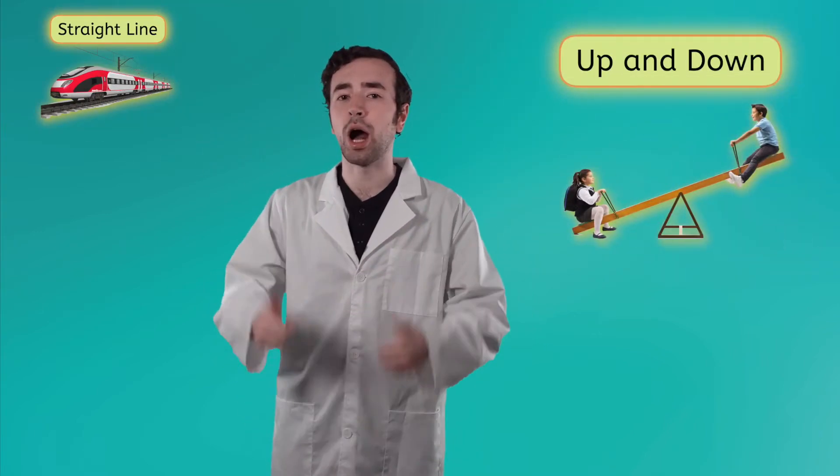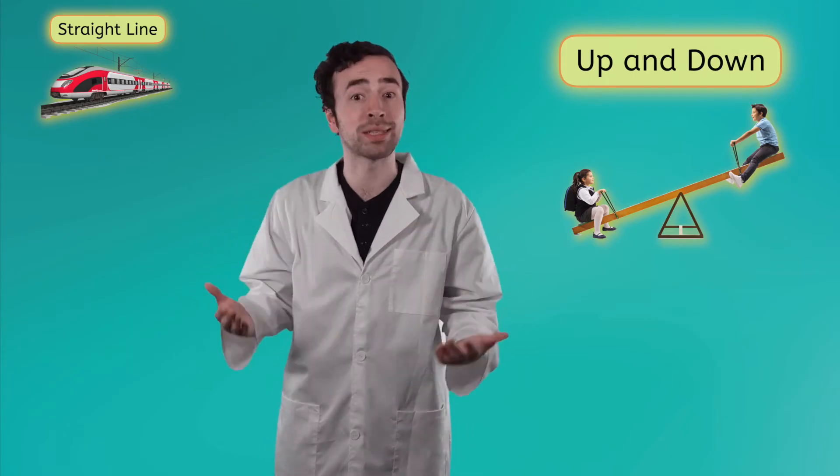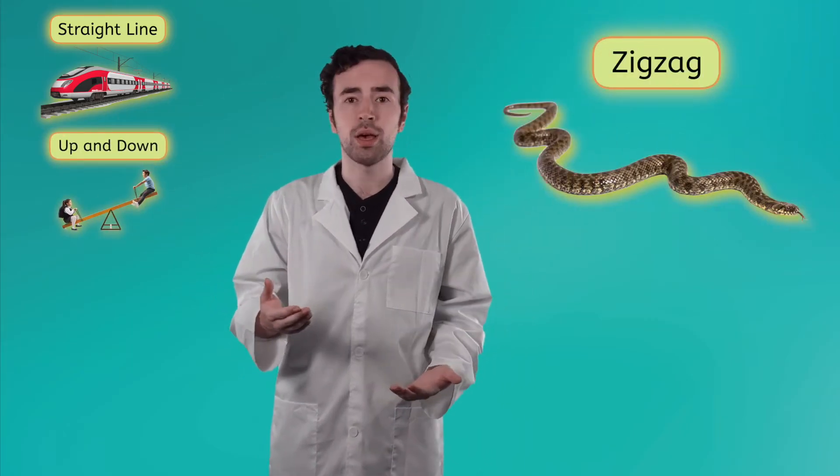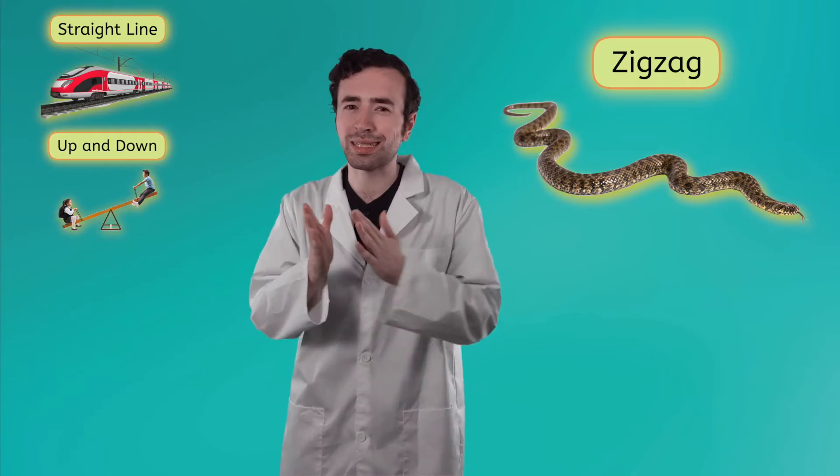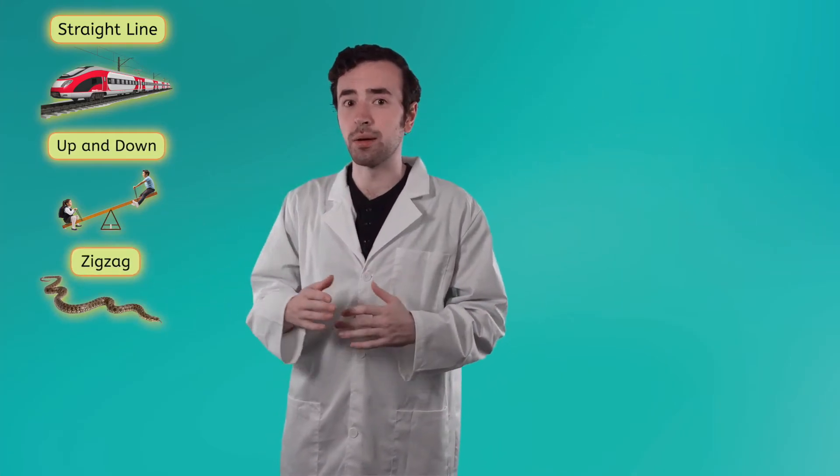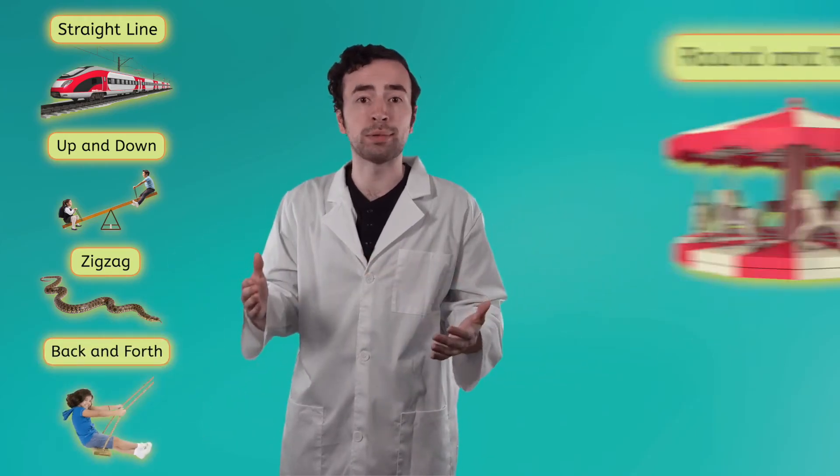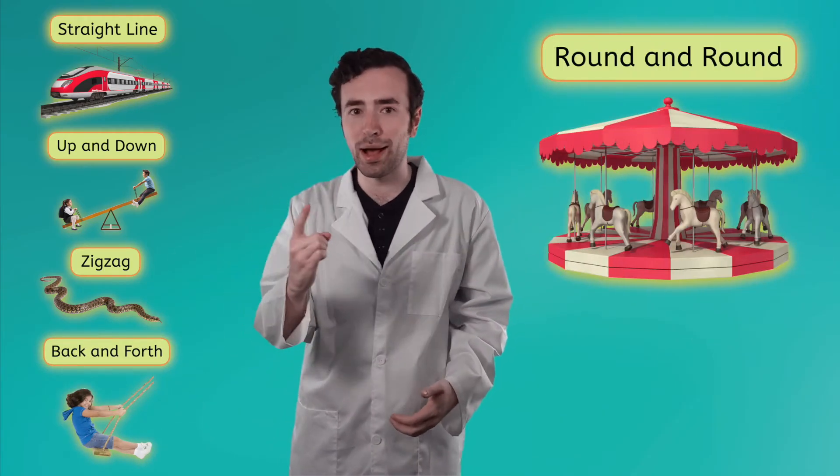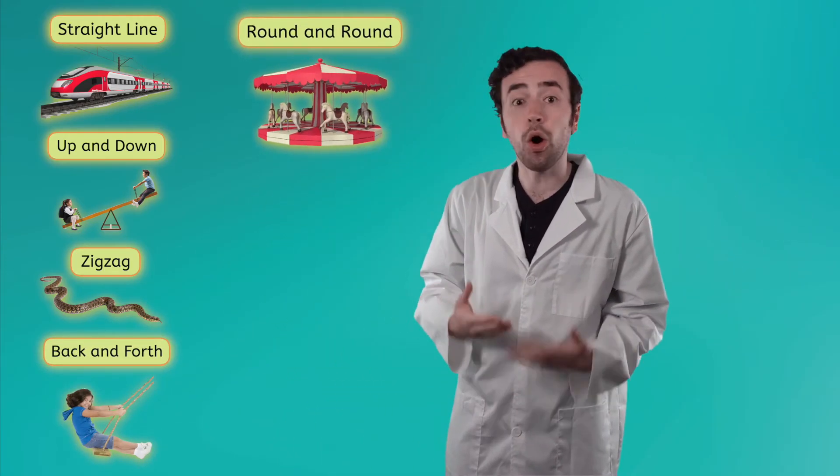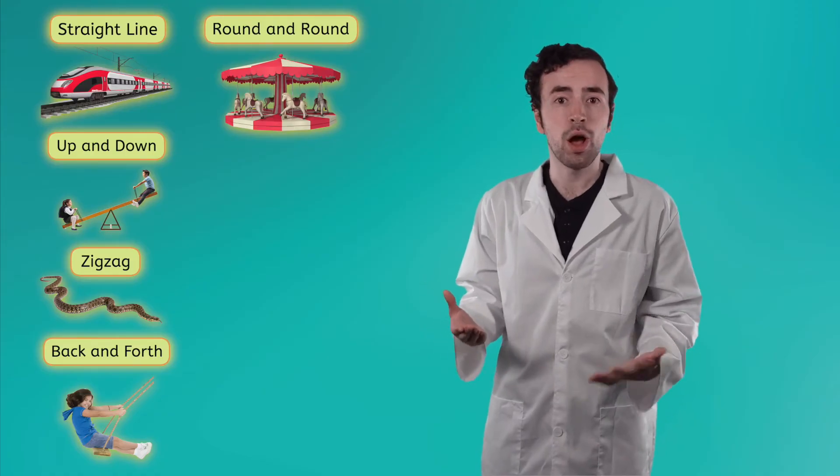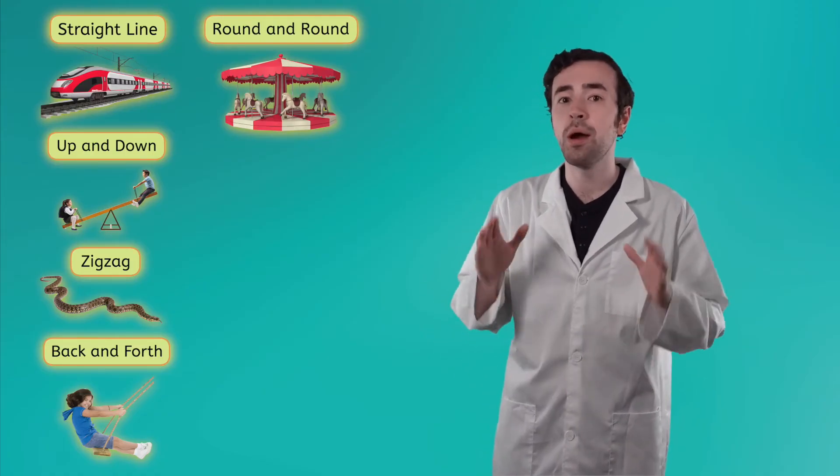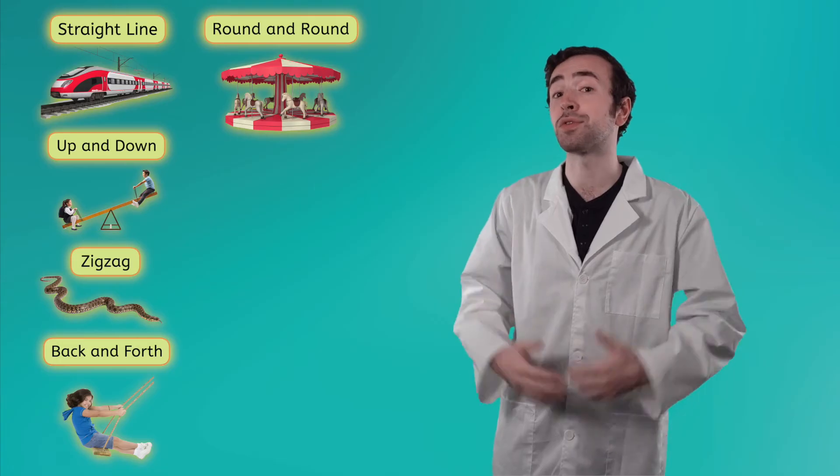Objects can also move in an up and down motion, like a seesaw. Some objects move in a zigzag motion, like a slithering snake. Some move back and forth, like a swing. Other objects move round and round, like a carousel. All of these types of motion are caused by forces pushing and pulling in different directions.